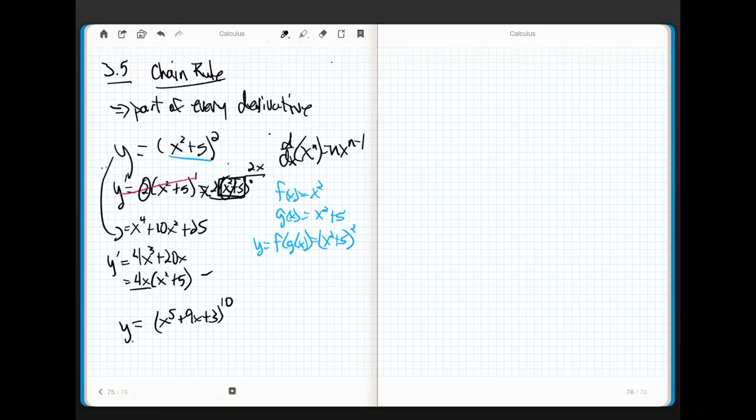So, watch how chain rule works, and then I'll give you the formula for it. Watch. What we say is we've got a composition of two functions. So, I'm going to think of y as being f of x equals x to the 10th, and then g of x equals x to the fifth plus 9x plus 3. So, y is equal to f of g of x.